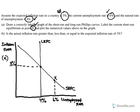That was probably the trickiest part of letter A — figuring out where to put the expected inflation rate. If you didn't get that, don't freak out. This question is likely worth two points, and you'll get a point just for drawing LRPC and SRPC. You don't need to get every single point to do well on the AP exam.